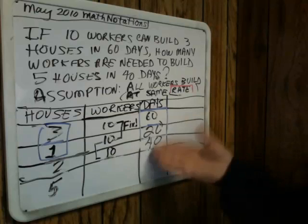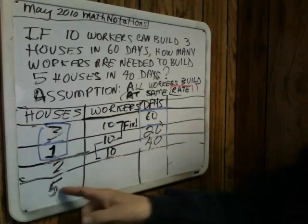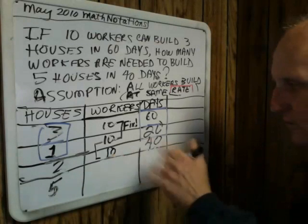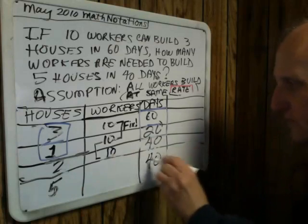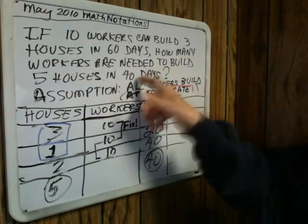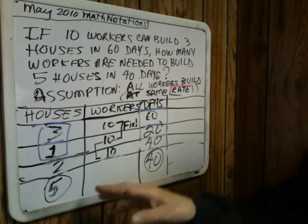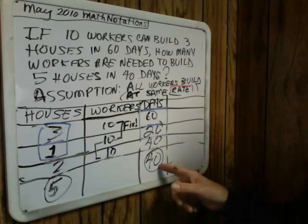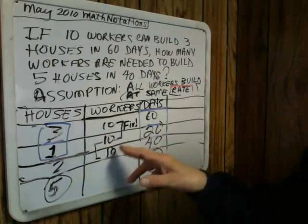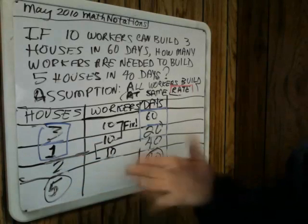But remember, we're building this up intuitively. Now we're coming to houses, workers, and days. We get to five houses. We don't know how many workers, but we'll keep the number of days fixed. So we've got two of the three quantities we want: five houses in 40 days. We want students to recognize that for the same amount of time, the number of workers needed is directly proportional to the number of houses.